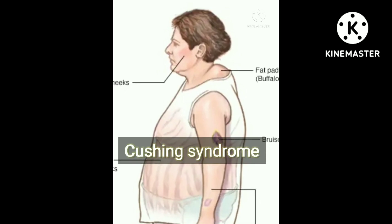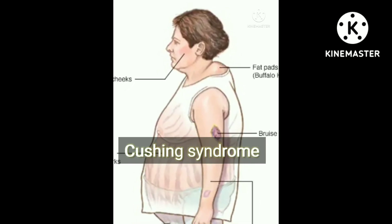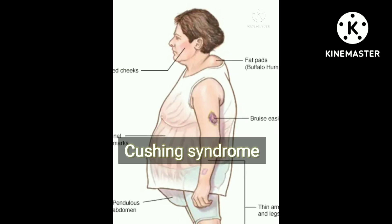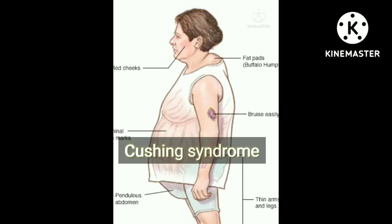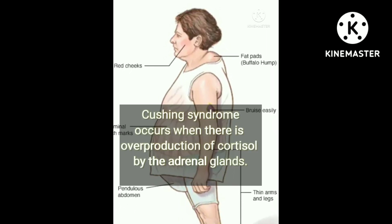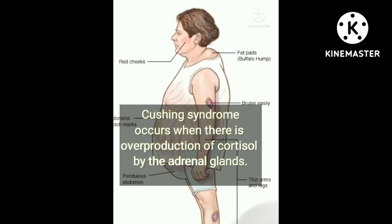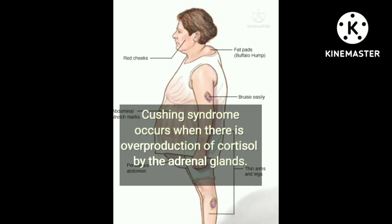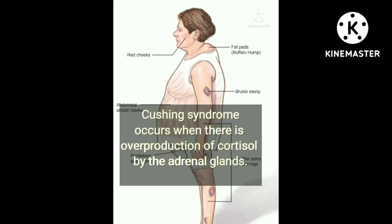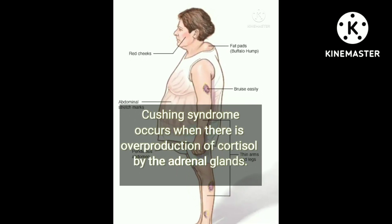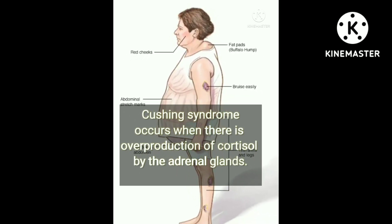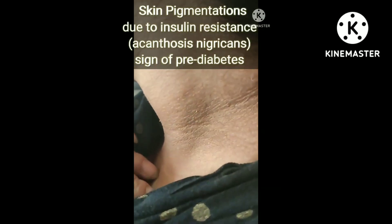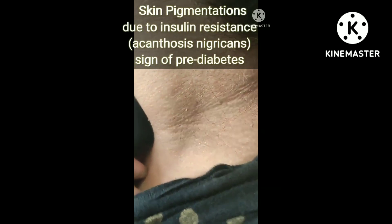Today we will discuss Cushing syndrome. Cushing syndrome is overproduction of cortisol by the adrenal glands. The adrenal cortex produces cortisol — the glucocorticoids — and in this condition there is excess production of cortisol.